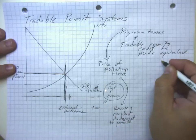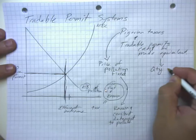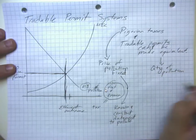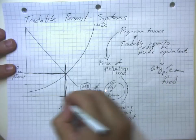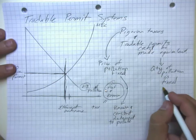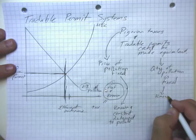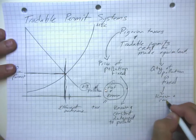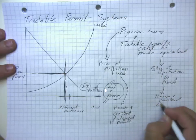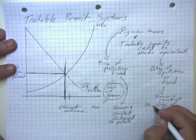Tradable permits, the quantity of pollution is fixed. Thou shalt not pollute more than the permit amount. So known and constant maximum quantity of pollution.